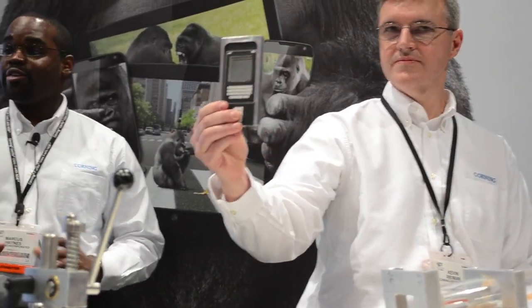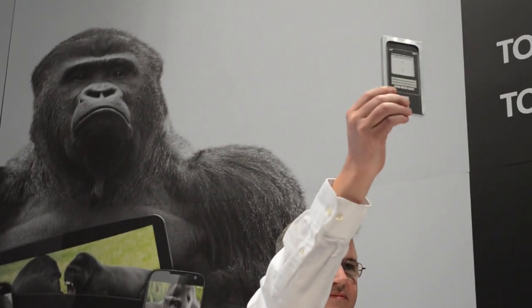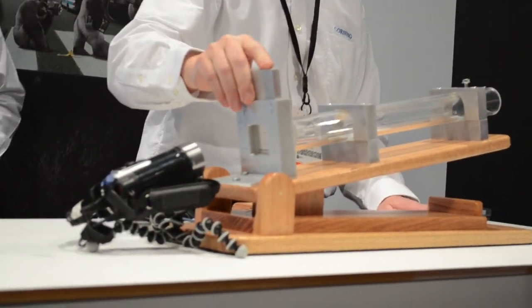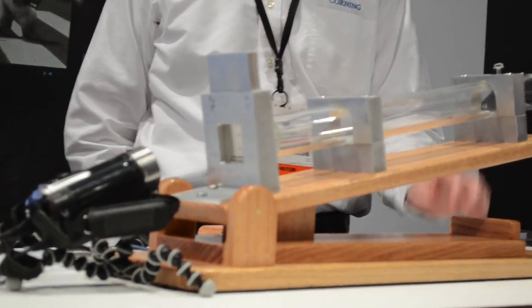They were the ones who came out with Gorilla Glass 2 last year. It was 22% thinner than Gorilla Glass 1 but still held up the same strength. Gorilla Glass 3 is exactly the same thing except it now has native damage resistance.